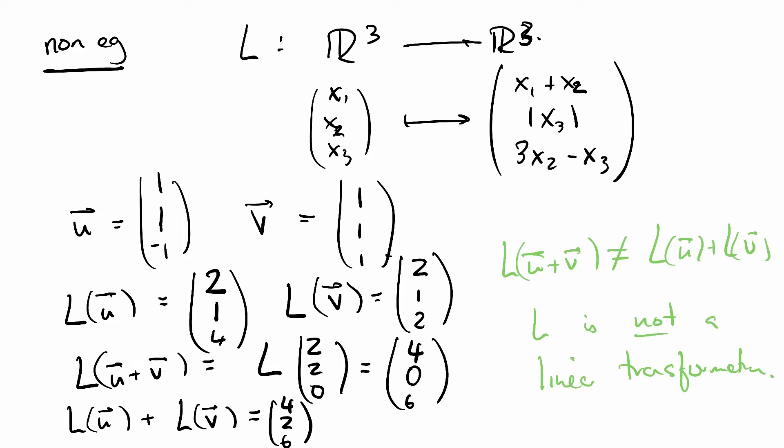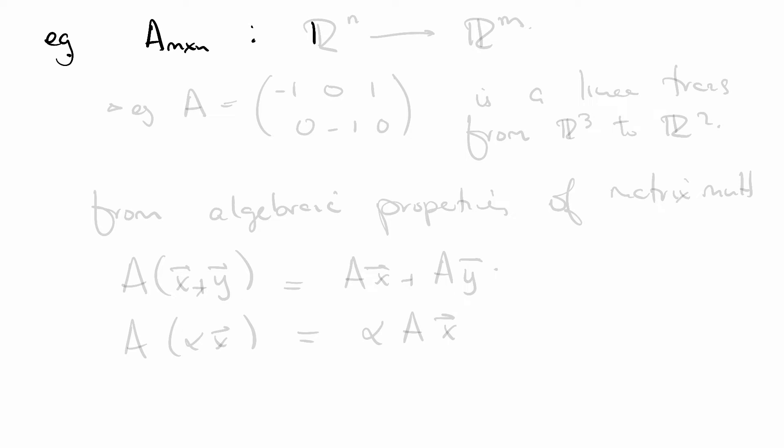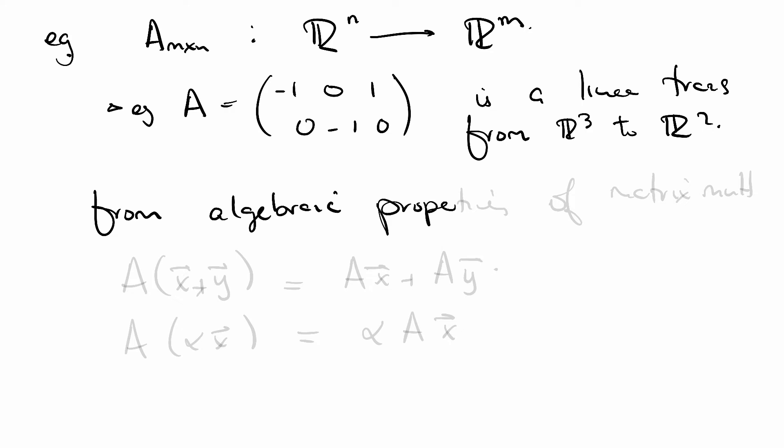Let's do another example. Say A is an n by m matrix. It is a linear transformation from Rn to Rm. For example, this is a 2 by 3 matrix, so it's going to go from R3 to R2. How do we know that it's a linear transformation? From the algebraic properties of matrix multiplication.